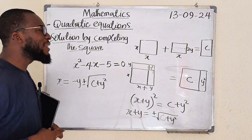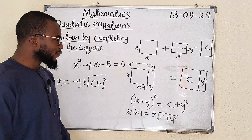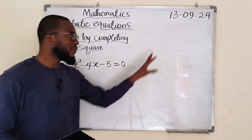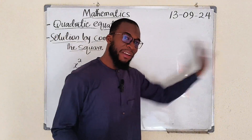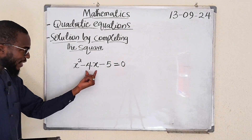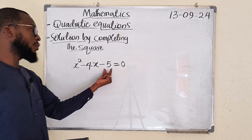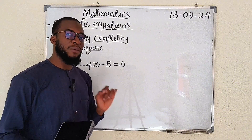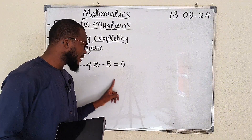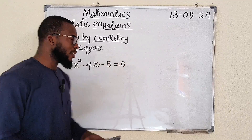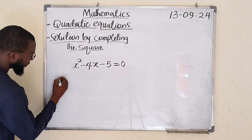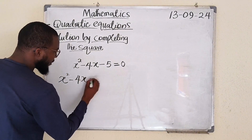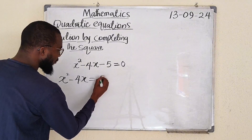So this is completing the square method in a practical sense. Can we apply the same principle here? We have a square and a rectangle equal to another rectangle, meaning we have to take the constant to the other side. That is the first step in solving a quadratic equation by completing the square method: take the constant term to the other side. So we have x squared minus 4x on the left-hand side, equal to — as negative 5 crosses over — it becomes positive 5.